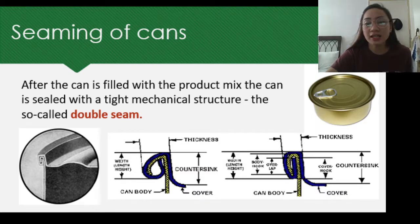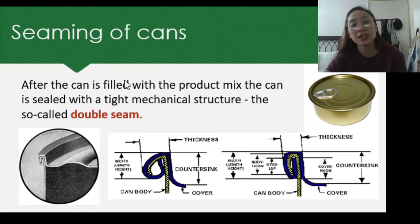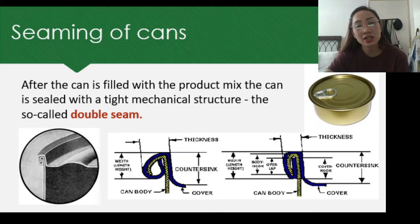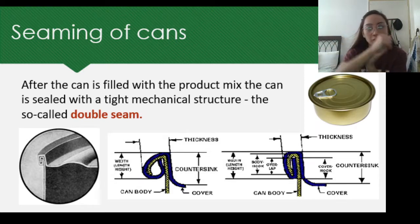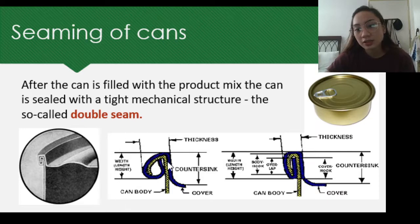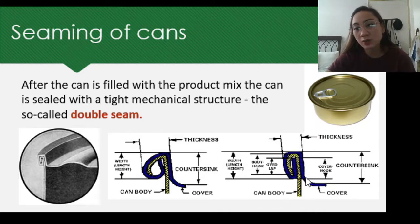This is the seaming of cans — how the can is sealed. After the can is filled with the product, it is sealed with a tight mechanical structure called a double seam. The double seam works by pressing together the metal cover and the can body — as shown here, the blue represents the cover and the yellow represents the can body — then they are enclosed through a machine.